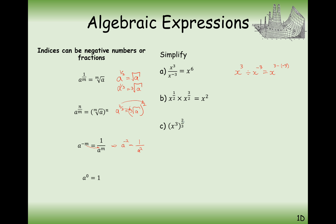For x cubed to the power of 3 over 2: when we have a power of another power, we multiply the indices. So it's 3 times 3 over 2, which gives us x to the power of 9 over 2. Then for the cube root of 125x to the 6, we treat them separately — calling the cube root a power of a third. The cube root of 125 is 5, and we multiply the indices on x to the 6 by a third, giving 5x squared.